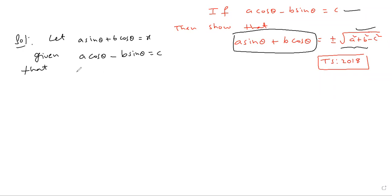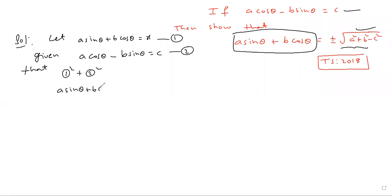Now square and add. Let equation 1 be x, that is a sin theta plus b cos theta equals x, and equation 2 be the given condition. Now go for equation 1 squared plus equation 2 squared: (a sin theta plus b cos theta) whole square plus (a cos theta minus b sin theta) whole square is equal to x square plus c square.